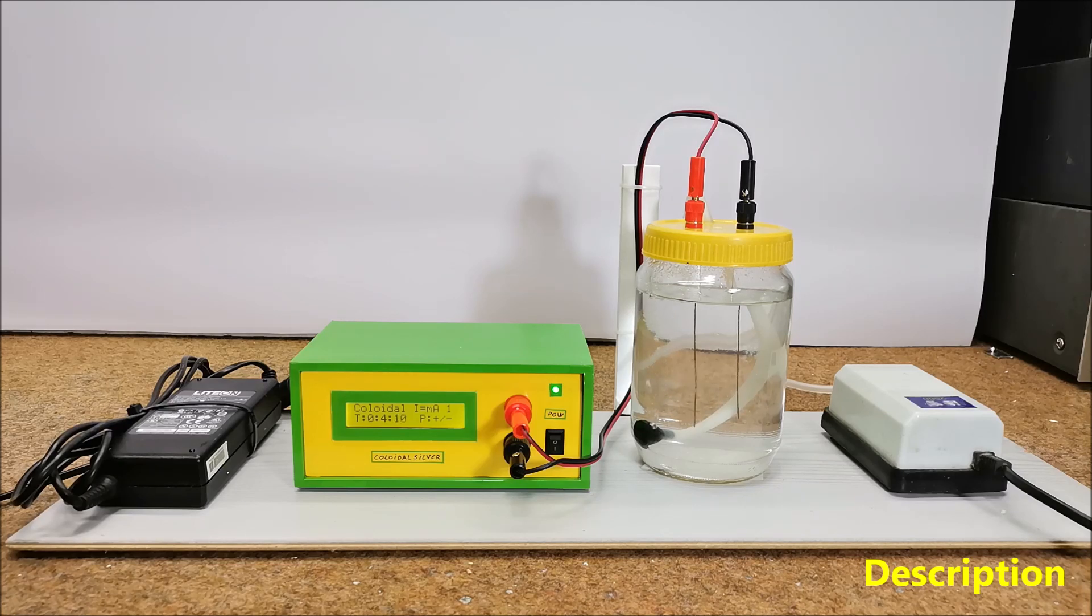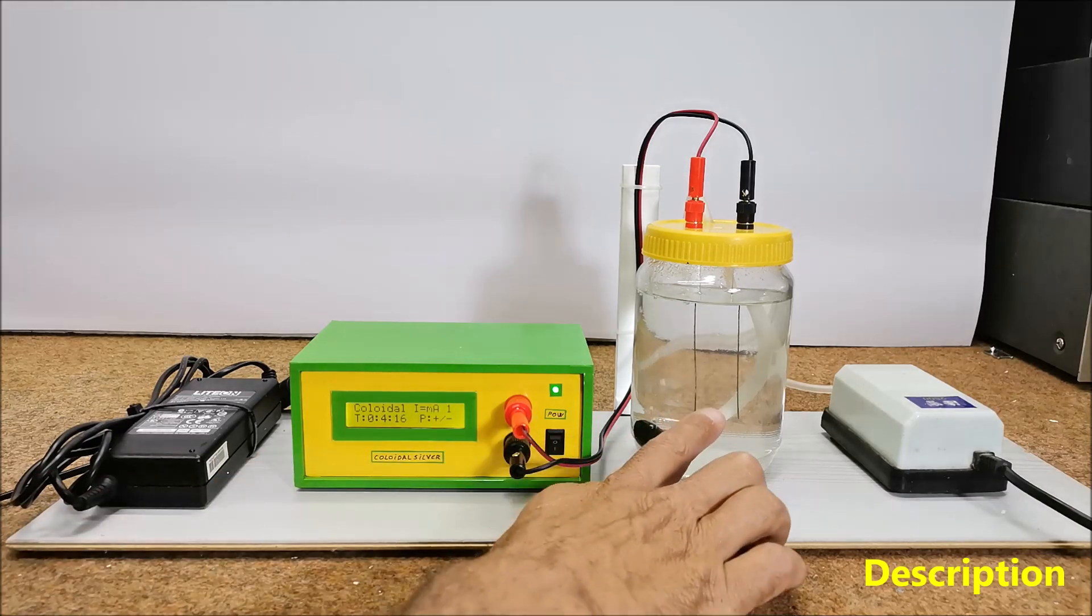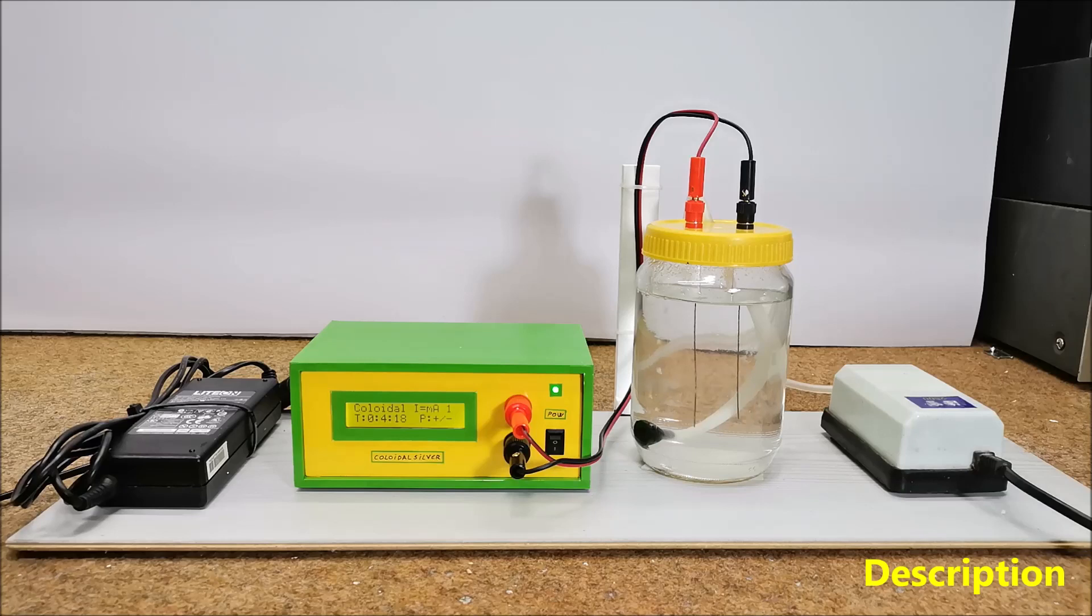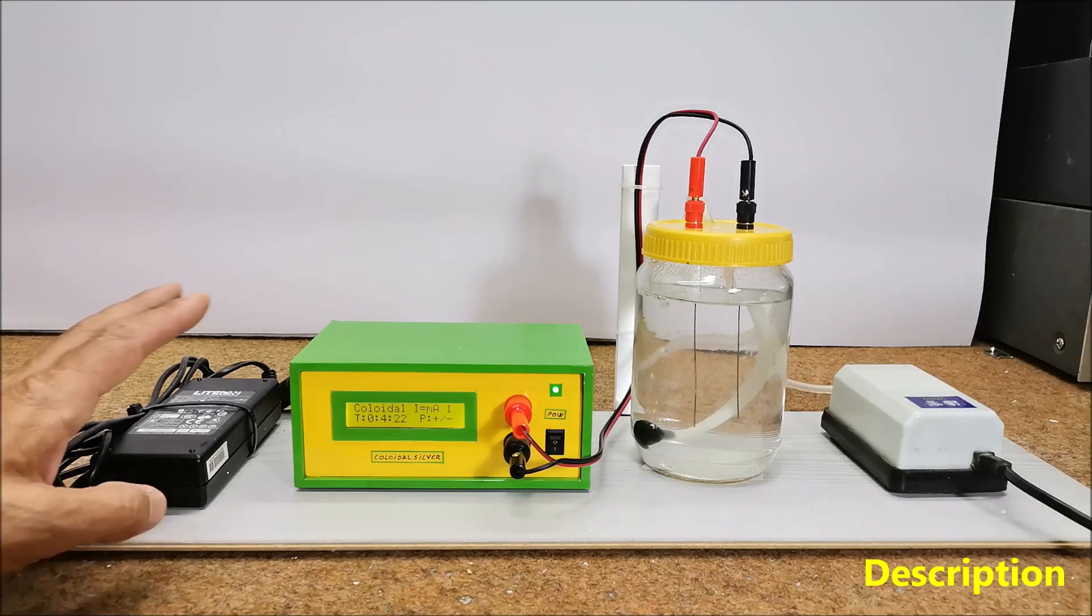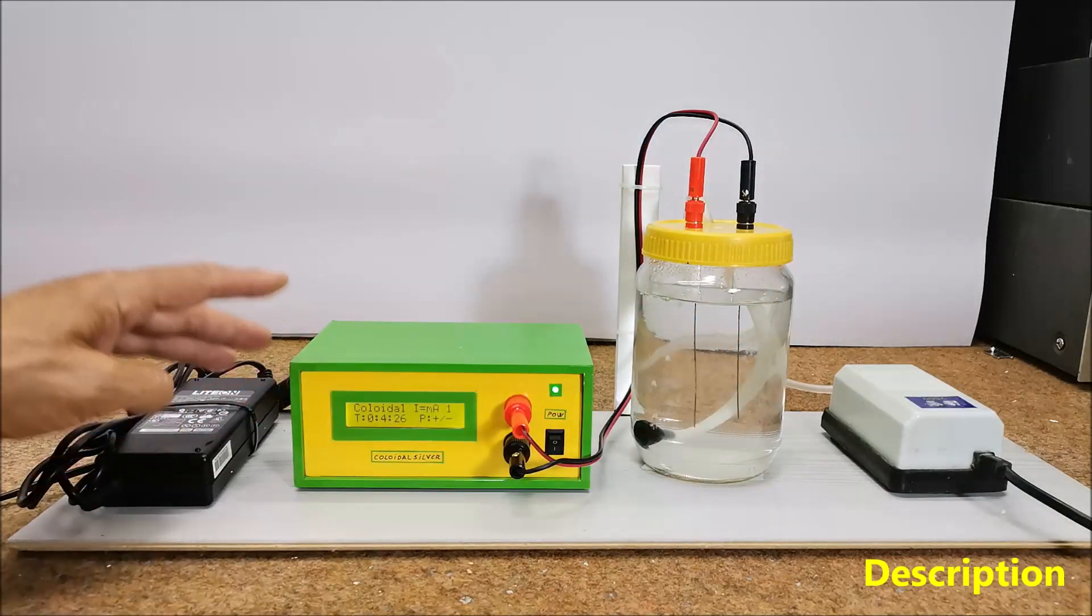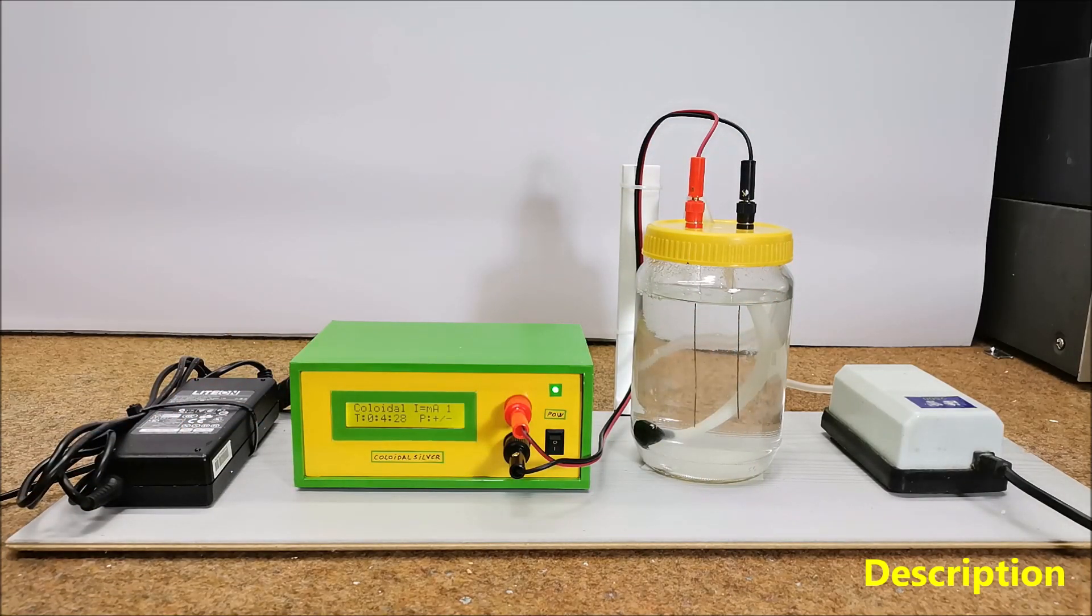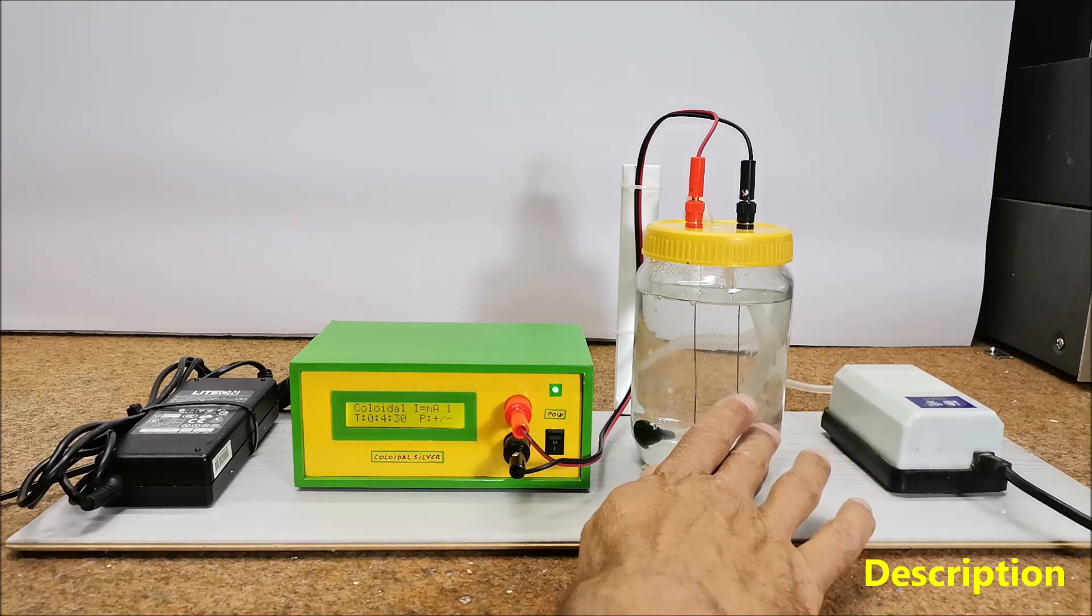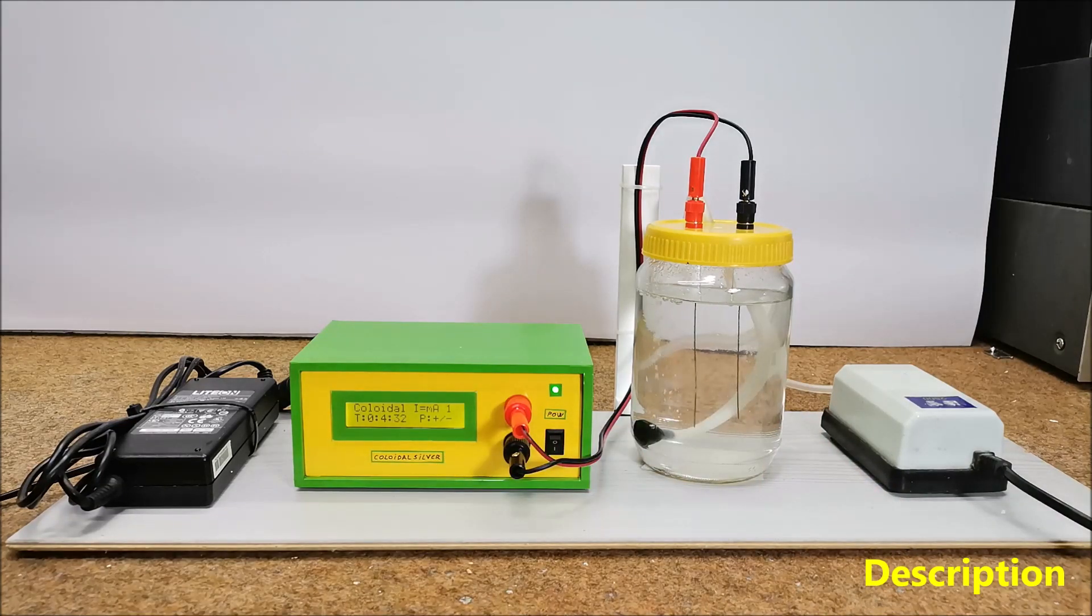The basic principle behind a colloidal silver generator is electrolysis. The generator consists of two electrodes, usually made of pure silver immersed in distilled water. When an electric current is passed through these electrodes, silver ions are released into the water creating a colloidal suspension of silver particles.